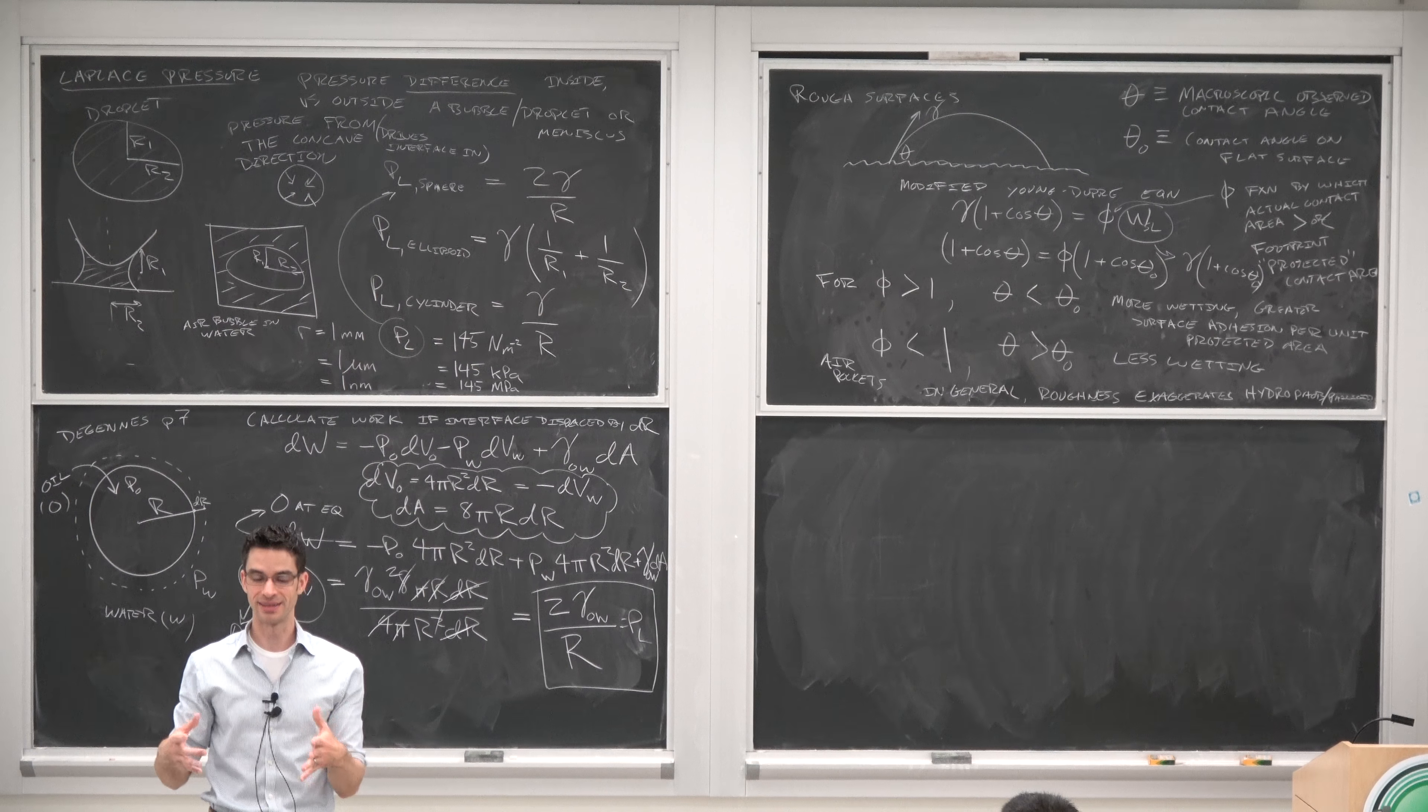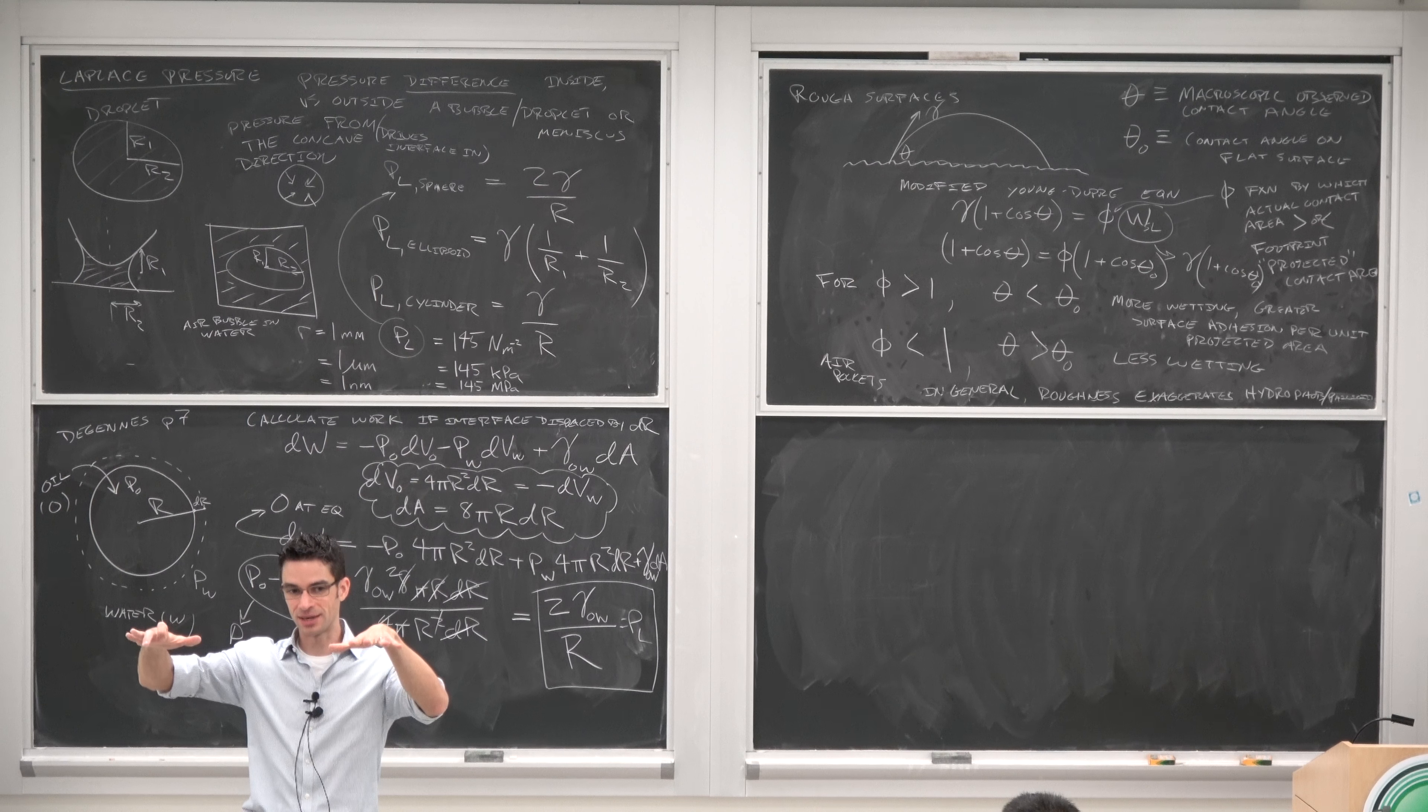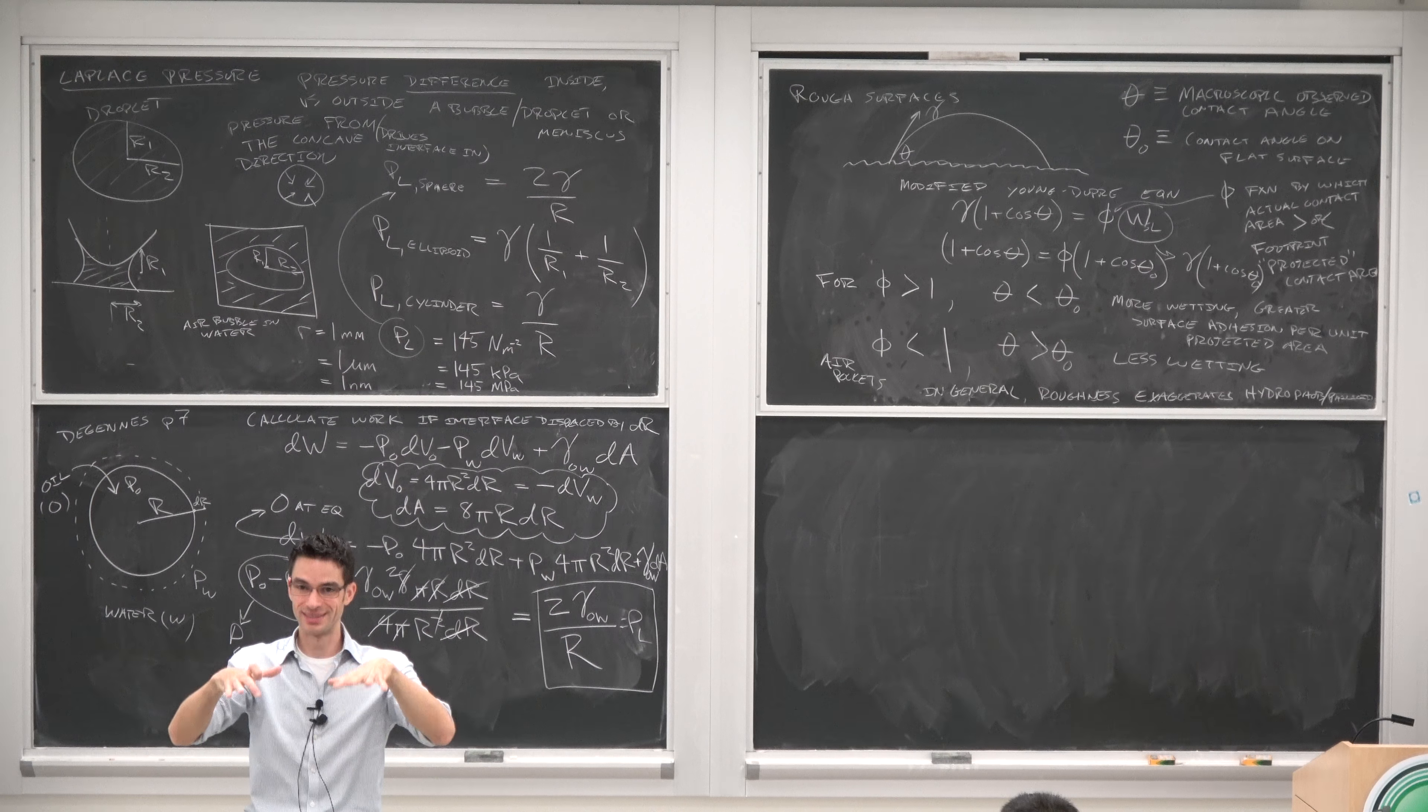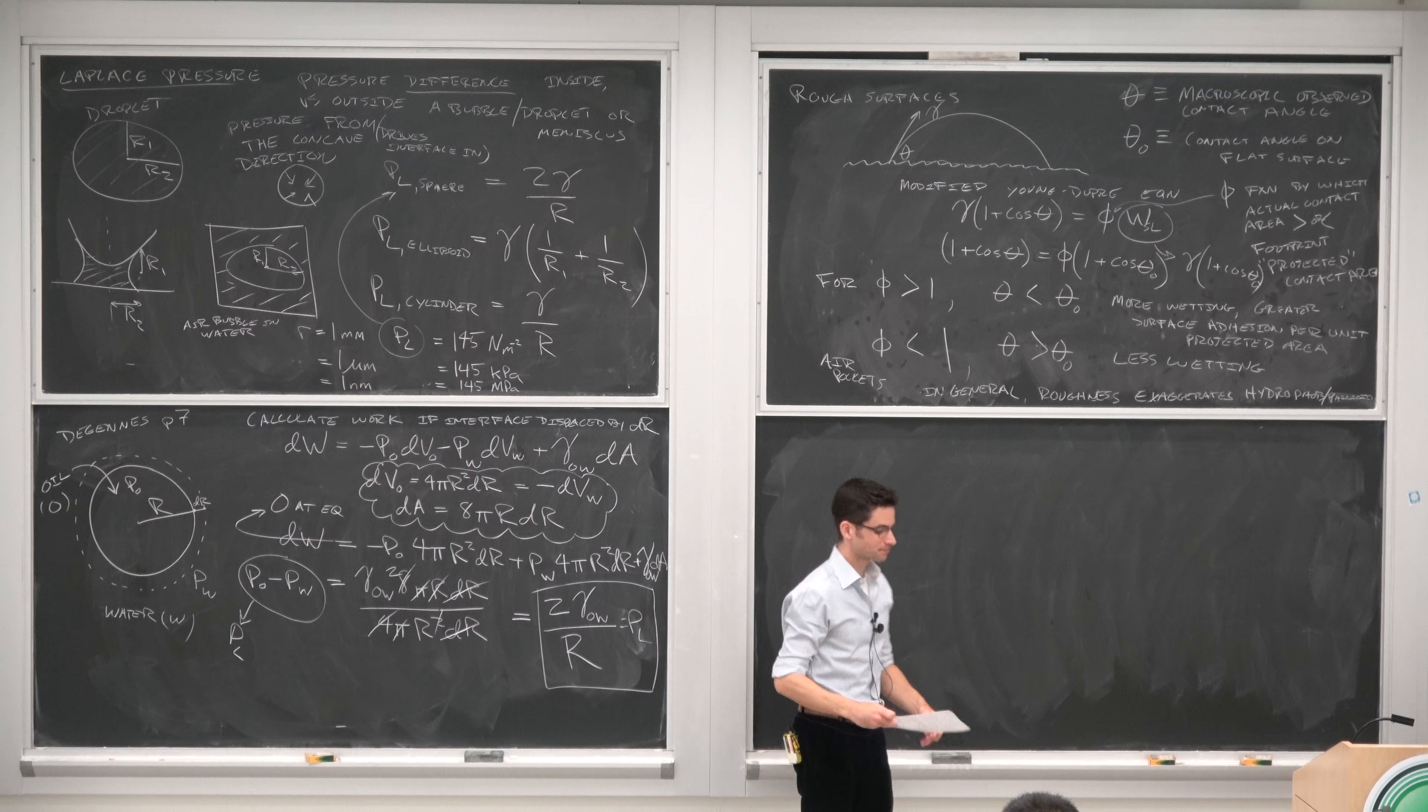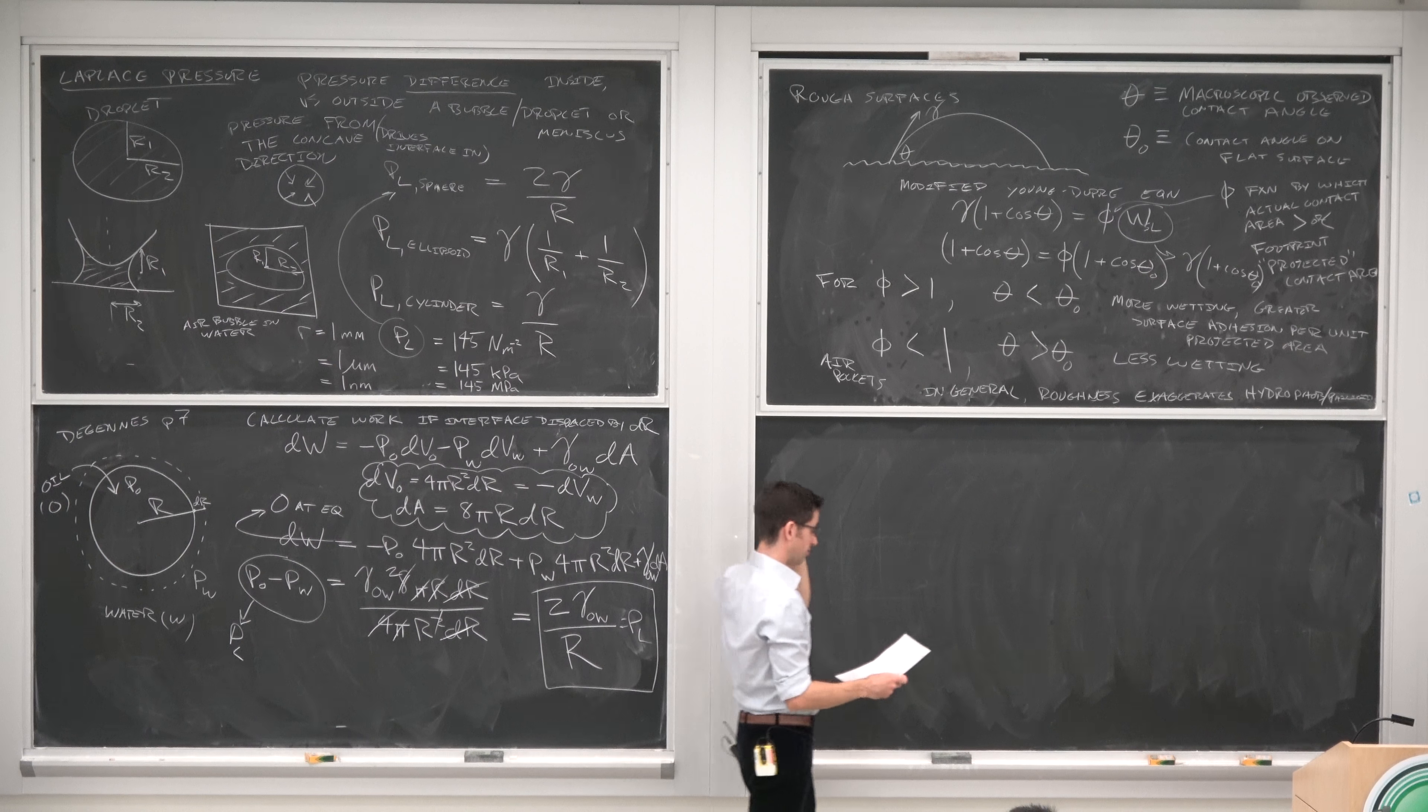So if you plot the contact angle of water on a glass slide over time, it actually starts out flat and then it eventually starts to bead up. Not like Teflon, but eventually the surface tension actually does, or sorry, the interfacial surface energy becomes between the solid surface and the gas becomes less because of the absorption of this organic crap from the atmosphere.